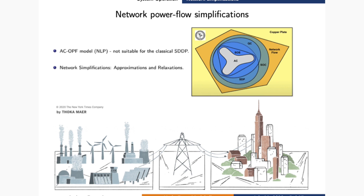We are planning the operation of a system which involves coordinating energy production from multiple resources and taking it to where it will be used. The most realistic formulation for this problem is the alternating current optimal power flow, which takes into account the complicated and non-convex power flow constraints, making this problem not tractable for multistage stochastic solution methods — namely the SDDP algorithm. So we have to use network simplifications, which are approximations and relaxations that transform the AC power flow problem into a convex problem. Here we have a Venn diagram which shows the feasible region for the AC problem — which is clearly not convex — and some relaxations of this problem. The closer the relaxations are to the original AC feasible region, the better, since our solutions will be more consistent with reality.